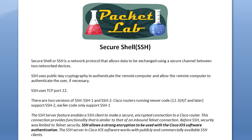The second protocol we're going to look at today is Secure Shell, or SSH. You can tell by the name what the focus of this feature is going to be. SSH is a network protocol that allows data to be exchanged using a secure channel between two network devices. It uses public key cryptography to authenticate the remote computer. Unlike Telnet, SSH uses TCP port 22. There are two versions of SSH — SSH1 and SSH2 — and you can guess which one is the older version. Cisco routers running relatively newer code support SSH2, while earlier code supports only SSH1. The important point from Cisco documentation is that SSH allows strong encryption to be used with Cisco IOS software authentication.